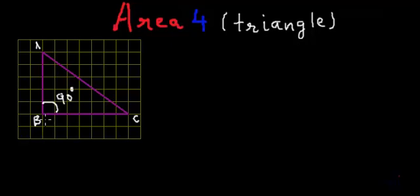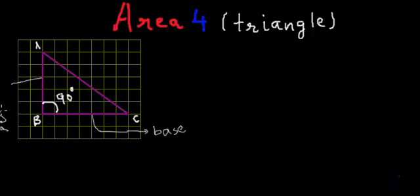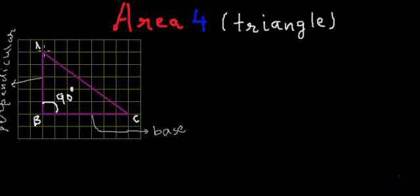So what can you say about the dimensions of this particular triangle? This horizontal line is called the base of the triangle and this vertical line is called the perpendicular. The perpendicular is actually a vertical line. But in this particular case of a right angle triangle, AB is not only the perpendicular but it is also the height of the triangle.